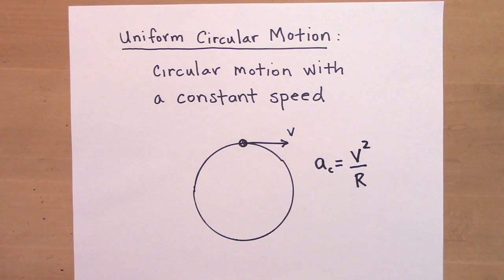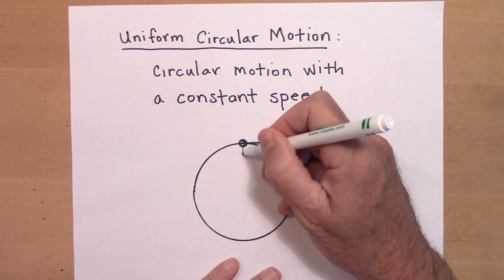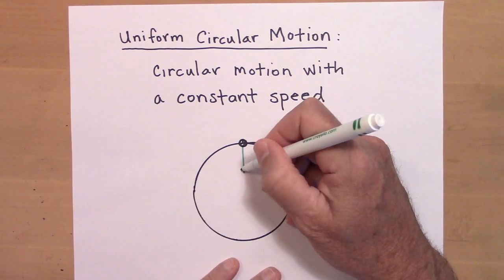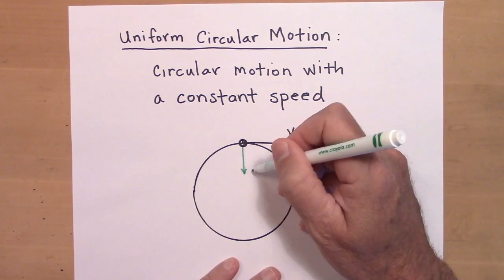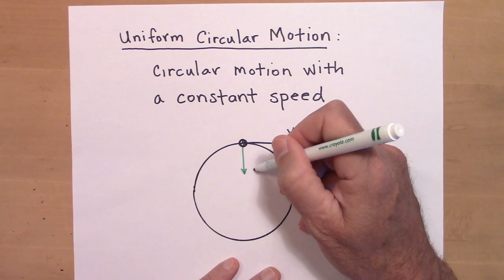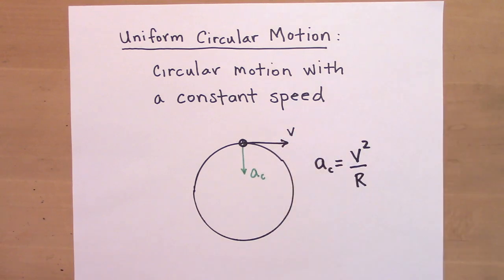The centripetal acceleration is always toward the center — it's center-seeking, that's why it's called centripetal. And AC equals V squared over R.